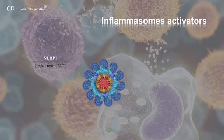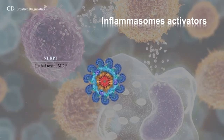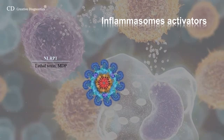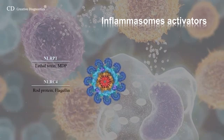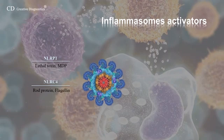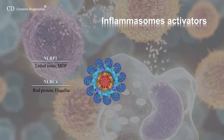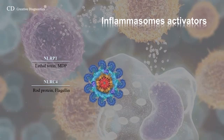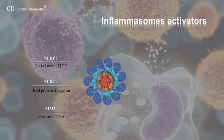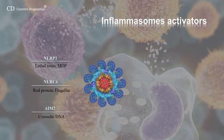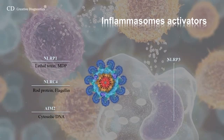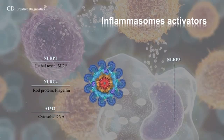The NLRP1 inflammasome is activated by Bacillus anthracis lethal toxin and muramyl dipeptide. The NLRC4 inflammasome is activated by gram-negative bacteria with type 3 or type 4 secretion systems. The AIM2 inflammasome senses double-stranded DNA. The NLRP3 inflammasome is activated in response to the widest array of stimuli,